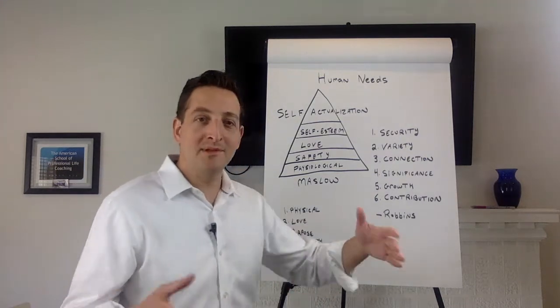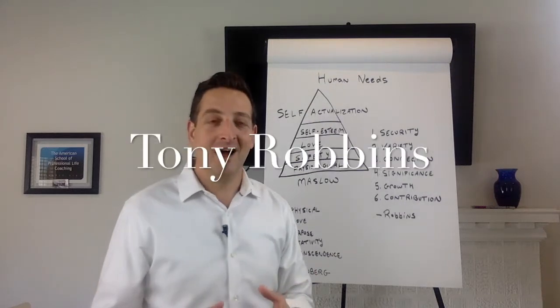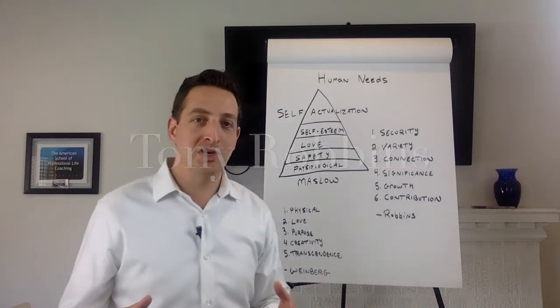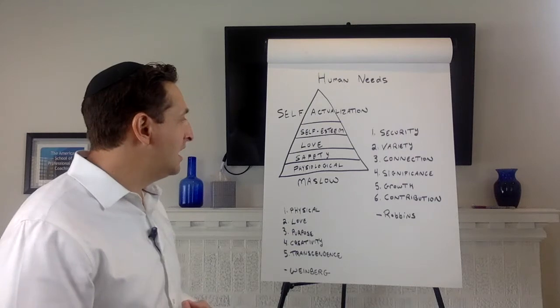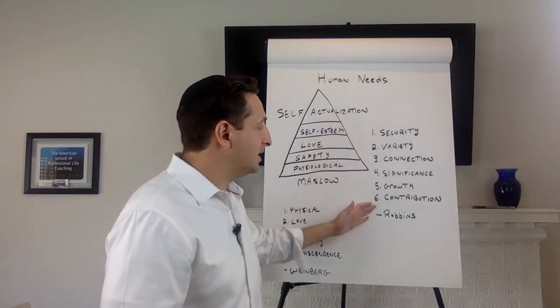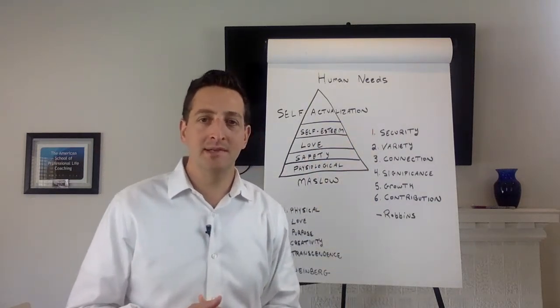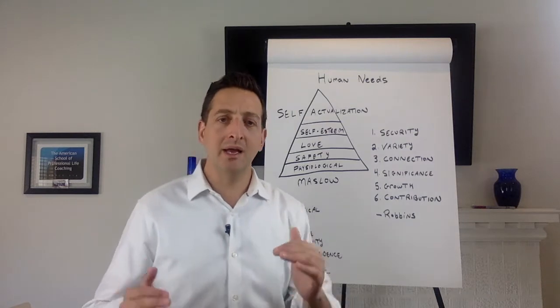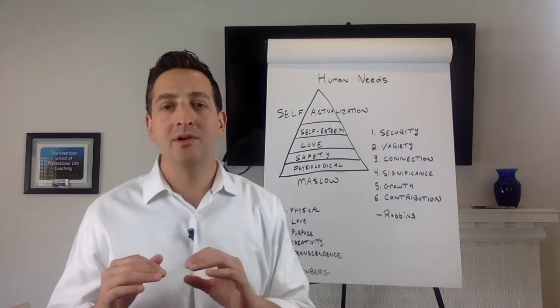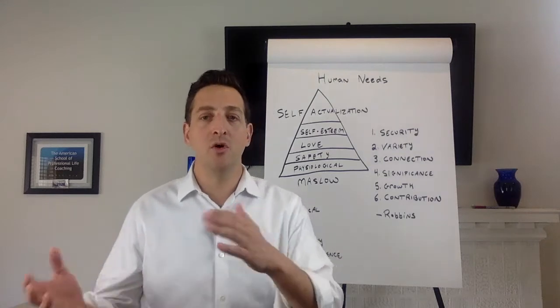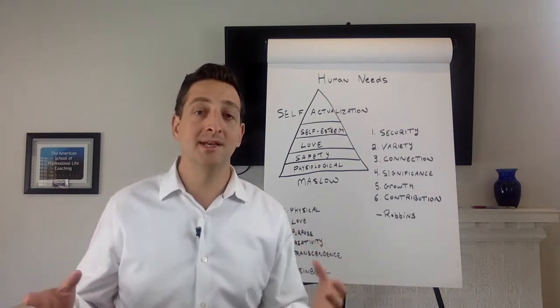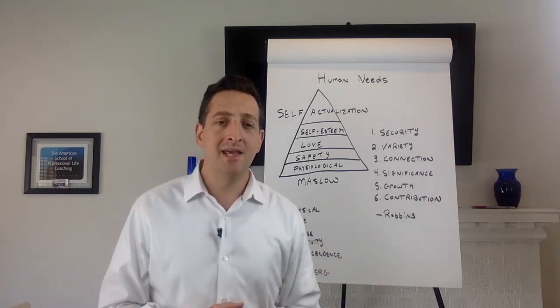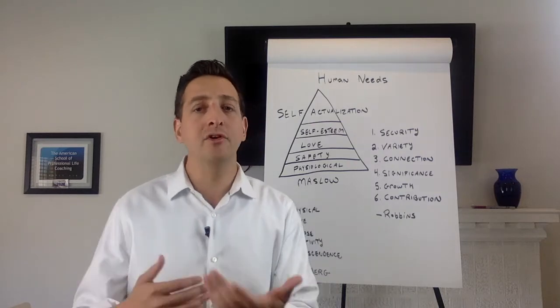We're going to move on to the next one that I really like, and this is from Tony Robbins, the famous Tony Robbins, one of the founders of the whole coaching movement. He has this really nice system of six human needs, and unlike Maslow they're not in a particular order. They're just six very human needs.